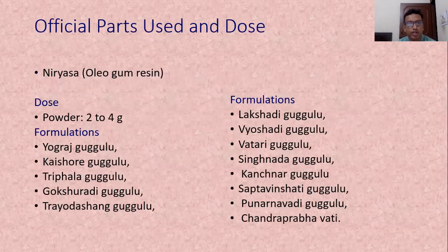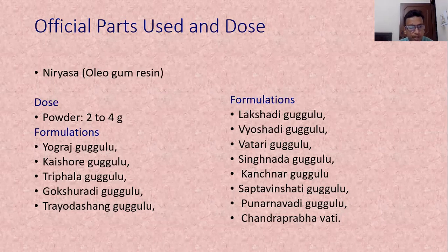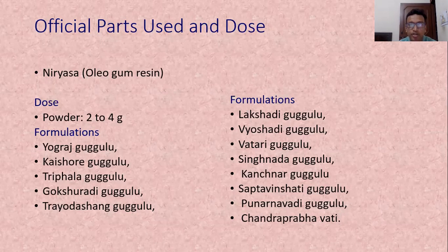The official part used is the oleogum resin or Niryas, given in the dose of 2 to 4 grams. All Gugul preparations in Ayurveda are prepared from Gugul only; there is no substitute. Important formulations include Yogaraj Gugul, Kaishore Gugul, Triphala Gugul, Gokshuradi Gugul, Trayodashanga Gugul, Lakshadi Gugul, Vyoshadi Gugul, Vatari Gugul, Simhanada Gugul, Kanchanara Gugul, Saptavimshatika Gugul, Punarnavadi Gugul, and Chandraprabha Vati.